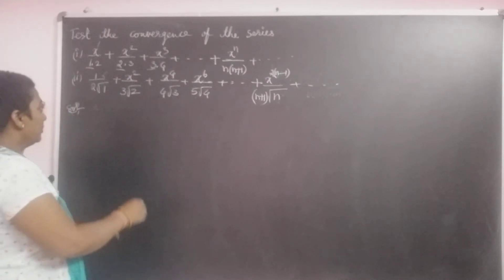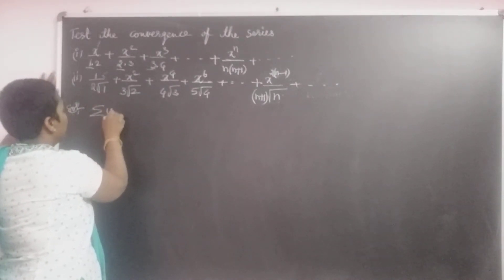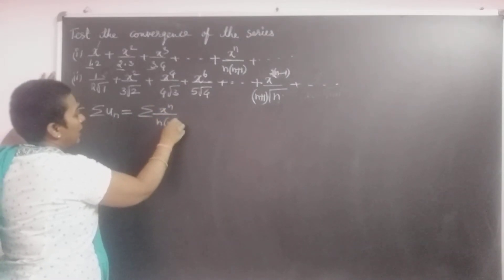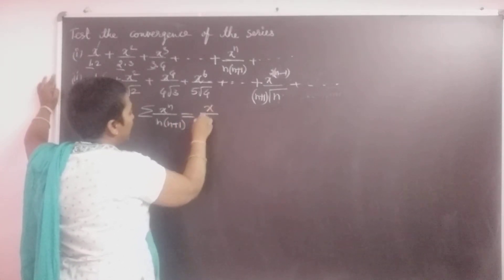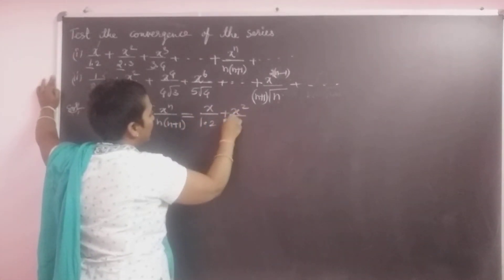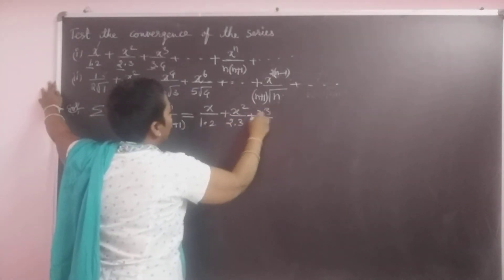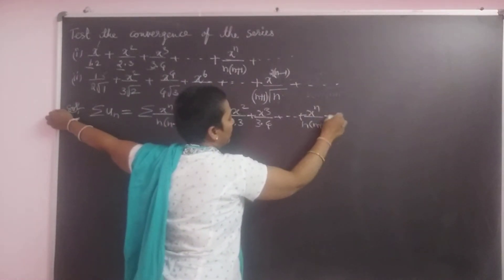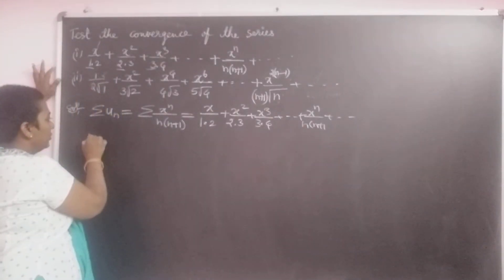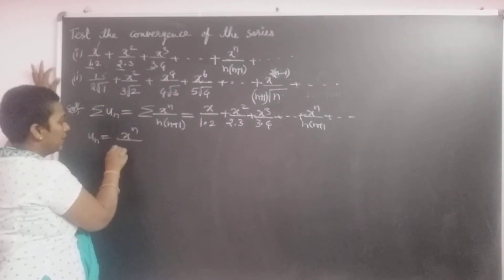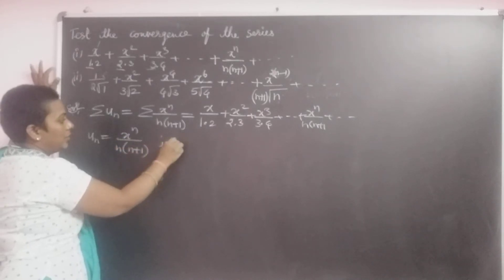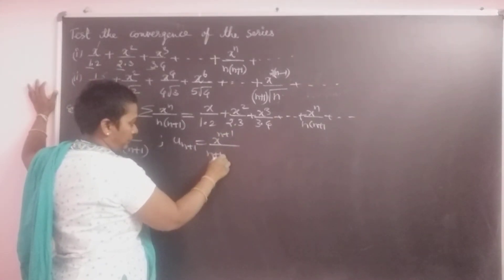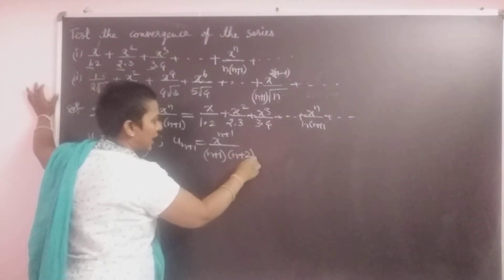Now I take the first problem. Σuₙ = Σ x^n / (n(n+1)), which equals x/(1·2) + x²/(2·3) + x³/(3·4) + ... + x^n/(n(n+1)) + ... Here uₙ = x^n / (n(n+1)), and uₙ₊₁ = x^(n+1) / ((n+1)(n+2)).